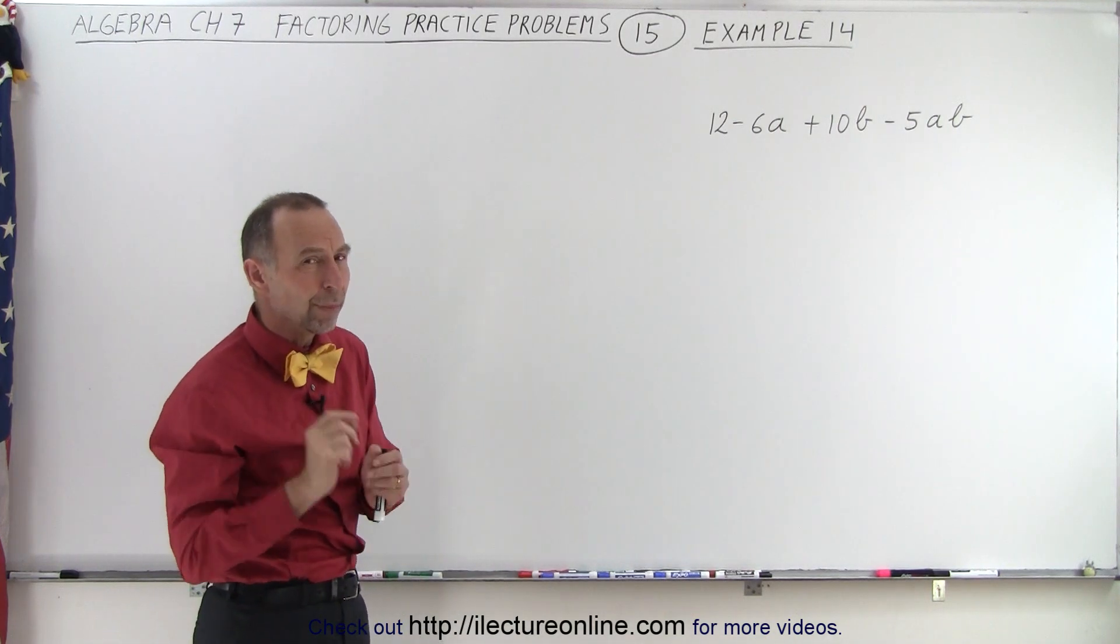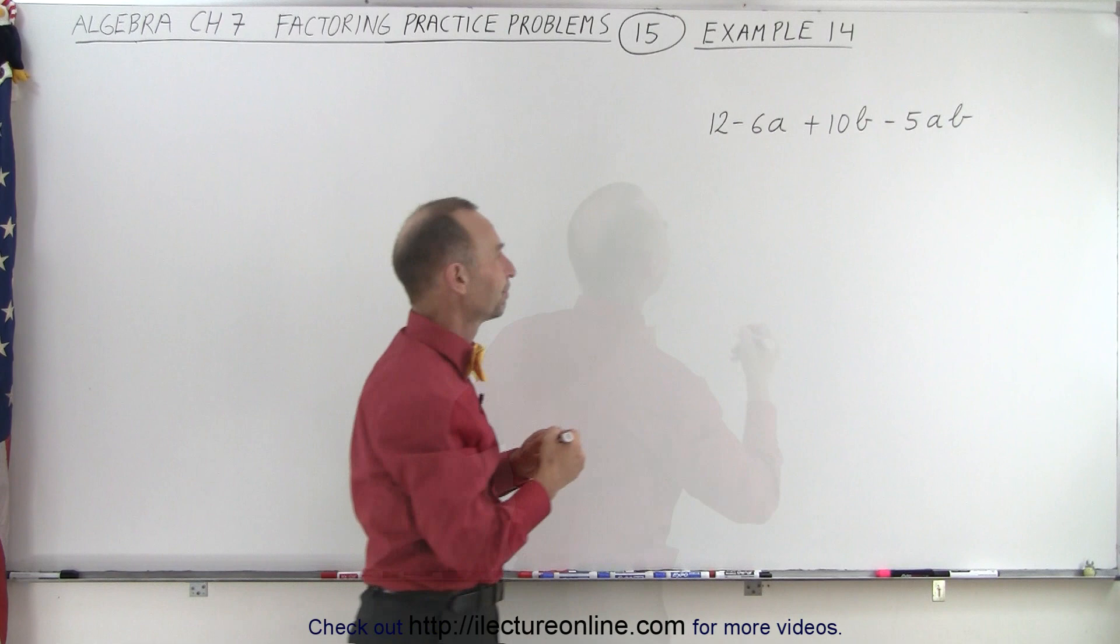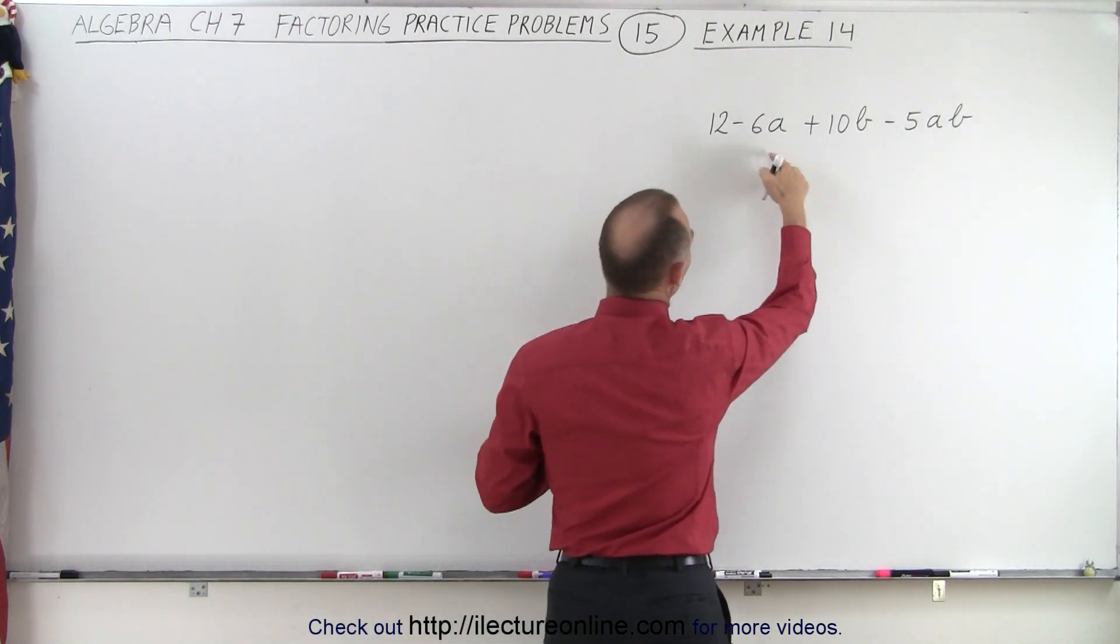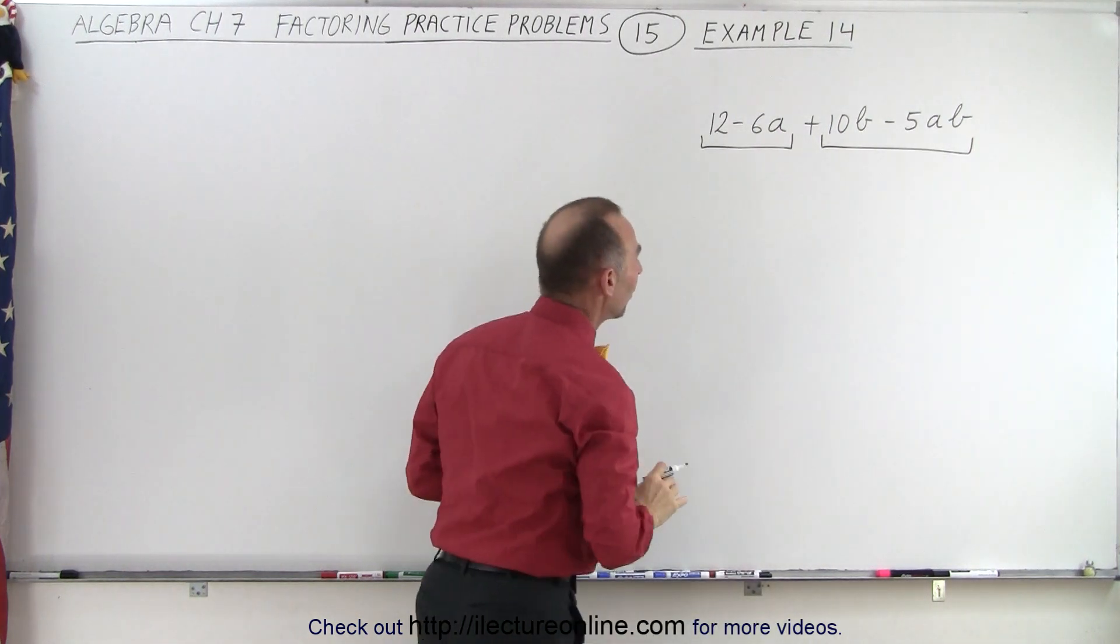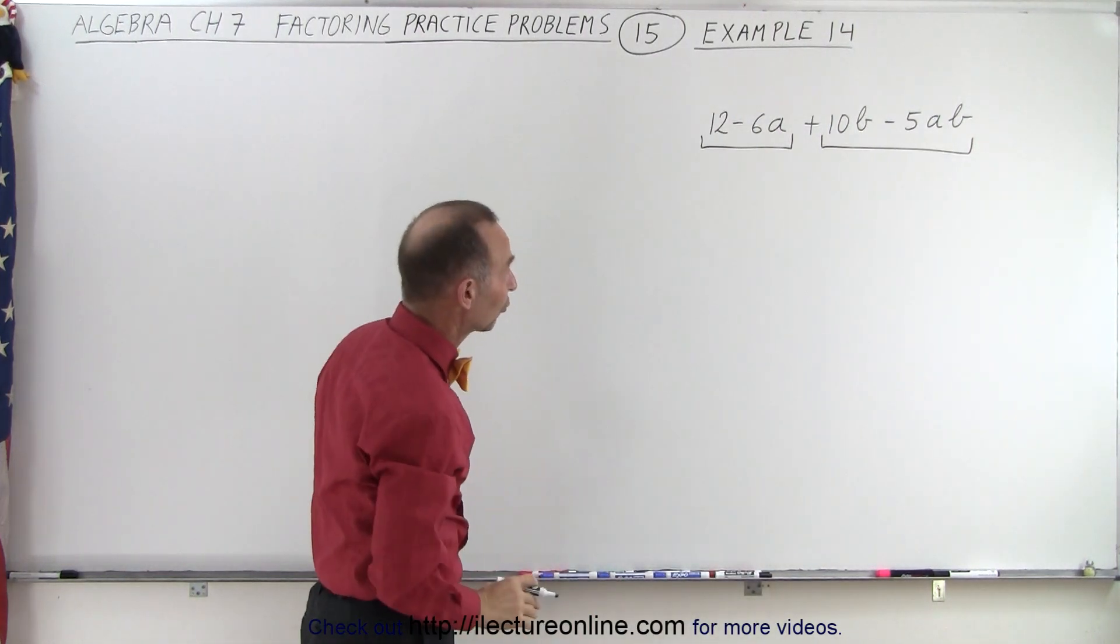But what if we group them two by two? Let's see what happens. So notice if we group the first two and group the last two together, then see what we can factor out, we might get to a factored solution.